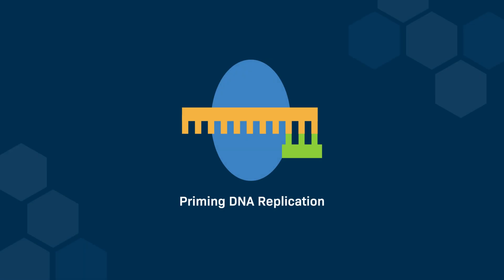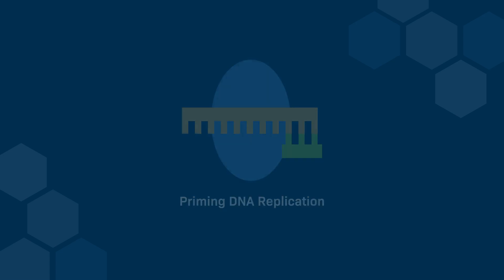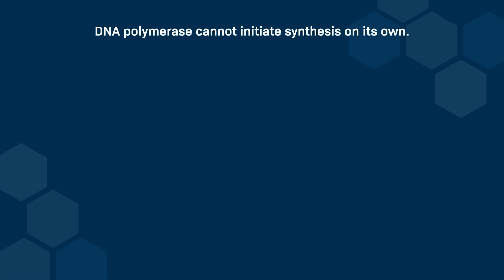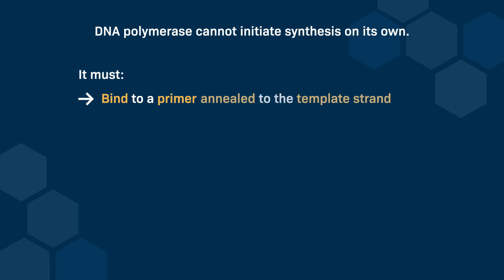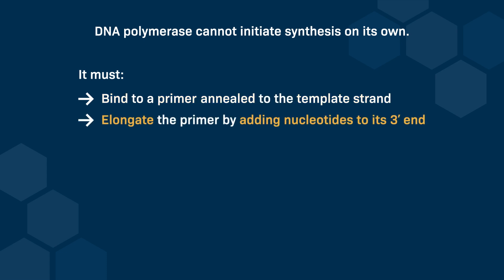This video discusses the priming of DNA replication. Let's begin by confirming what we know about DNA replication. We know that DNA polymerase cannot initiate synthesis on its own. It must bind to a primer that is annealed to the template strand, and elongate the primer by adding nucleotides to its 3' end.